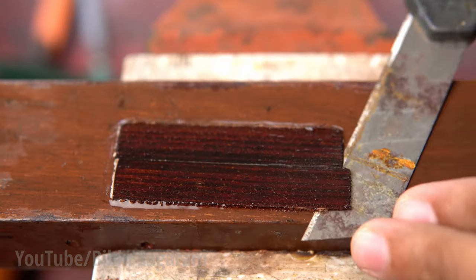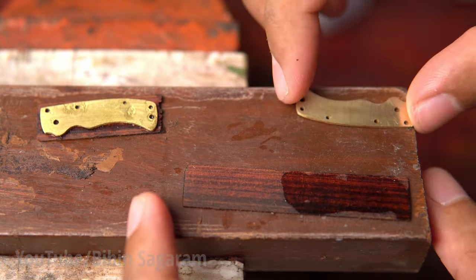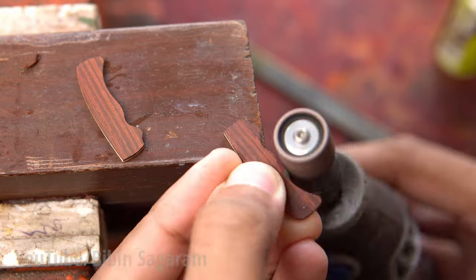A flat file is used to reduce the thickness. After adding the wood the total width of the handle will be 4.2mm. Now the wooden scales are glued to the brass handle using CA glue.